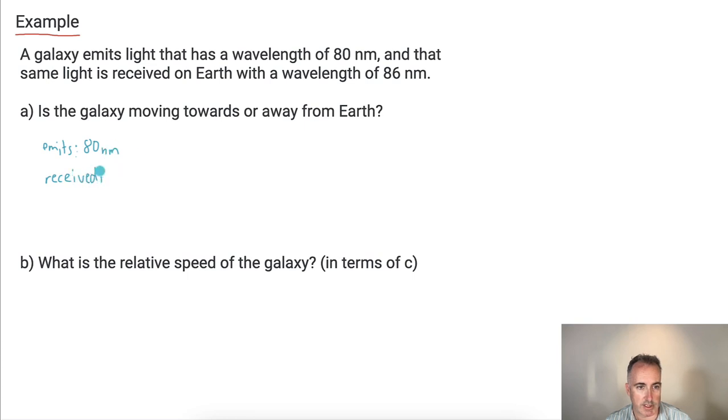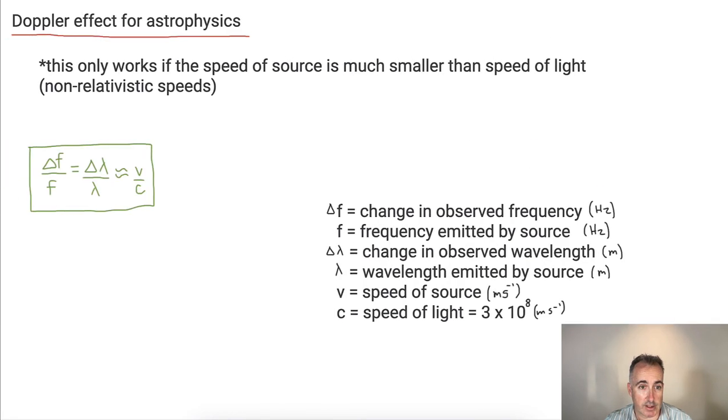We receive on Earth at 86 nanometers. Received, we have 86 nanometers. So what happened? Well, what happened is the wavelength went up, didn't it? And if wavelength goes up, what does that mean? If the wavelength goes up, that means this thing is going away from you.